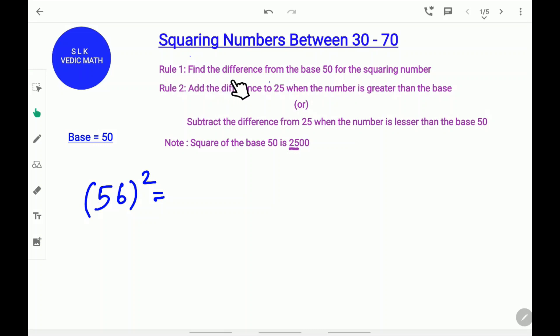First, find the difference from the base 50 for the squaring number 56. The difference is 6. Next, when the number is greater than the base 50, add the difference to 25. Why add it to 25? Because the square of the base 50 is 2,500. We take 25.